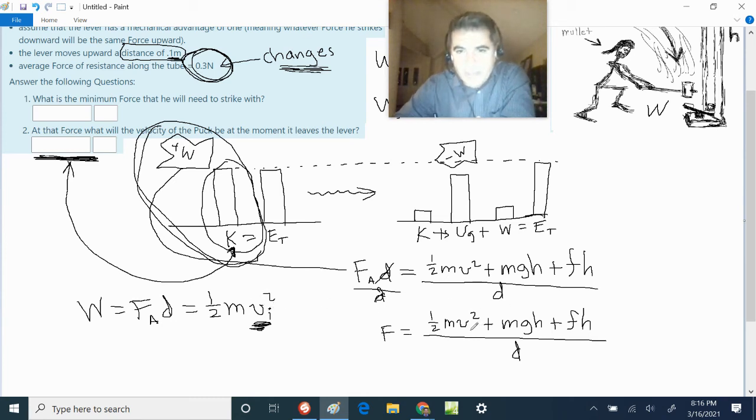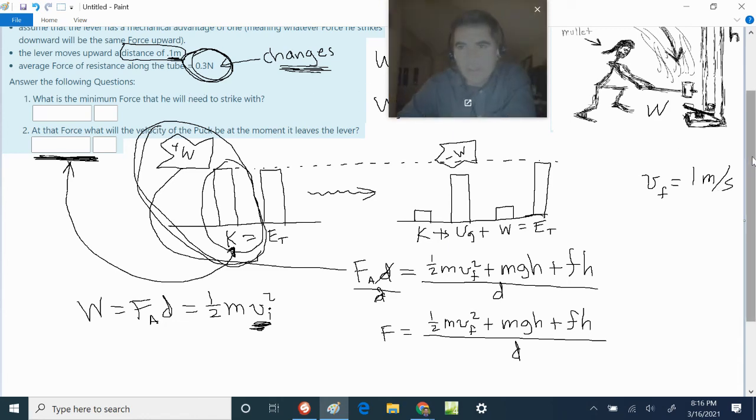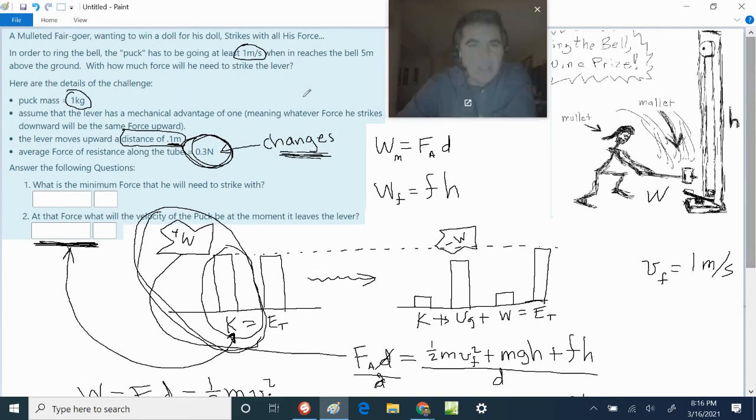So, this one is V final, and the V final here, VF, should be equal to 1 meter per second because it says here somewhere on there, it says it has to be going at least 1 meter per second to actually ding the bell.